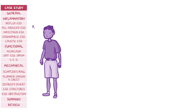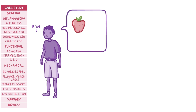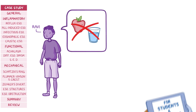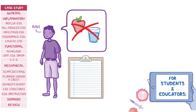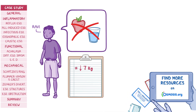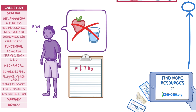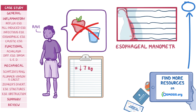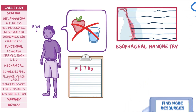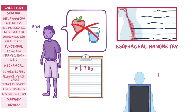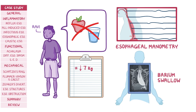A 33-year-old named Ravi came to the clinic because he has difficulty swallowing food and water over the last three months. Physical examination shows significant weight loss of 7 kilograms or 15 pounds since his last visit four months ago. Esophageal manometry shows incomplete lower esophageal sphincter relaxation in response to swallowing, while barium swallow reveals a dilated esophagus with an area of distal stenosis.